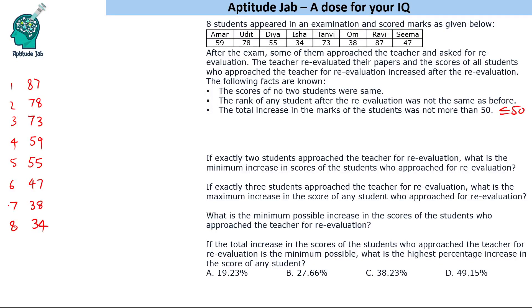At minimum, one person has to go for re-evaluation. If one person goes, the rank-1 student will lose its rank only if someone goes above them. The last-place student — unless their score increases — will not change rank, so this person must compulsory increase their marks. Someone also has to go above the rank-1 person.